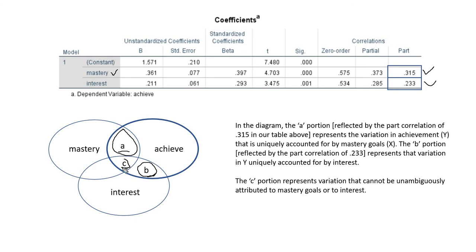Area C is sort of a no-man's land. If you take the proportions reflected in areas A, B, and C and add them all together, they sum to the total R-squared for the model, which reflects the proportion of variation in the dependent variable accounted for by the set of predictor variables. So if you take areas A and B, sum them up, and subtract those from the total R-squared, you get the proportion of variation in achievement accounted for by the joint overlap reflected in area C.